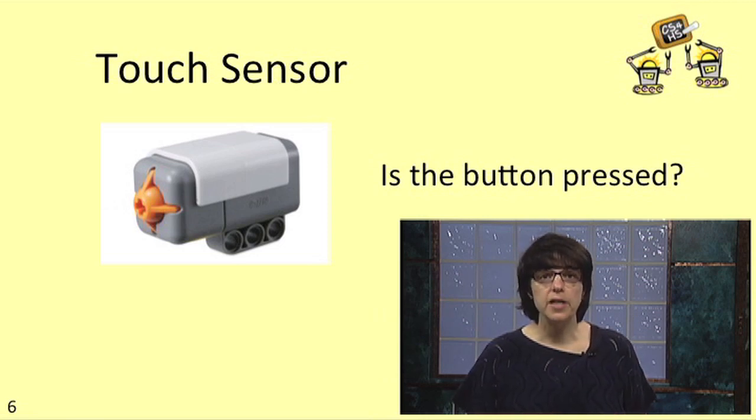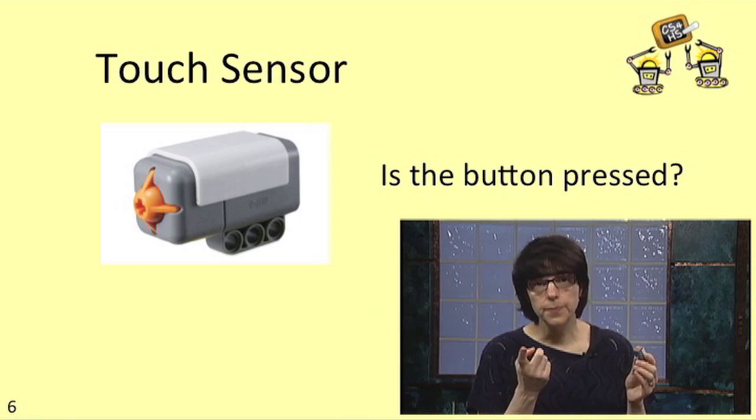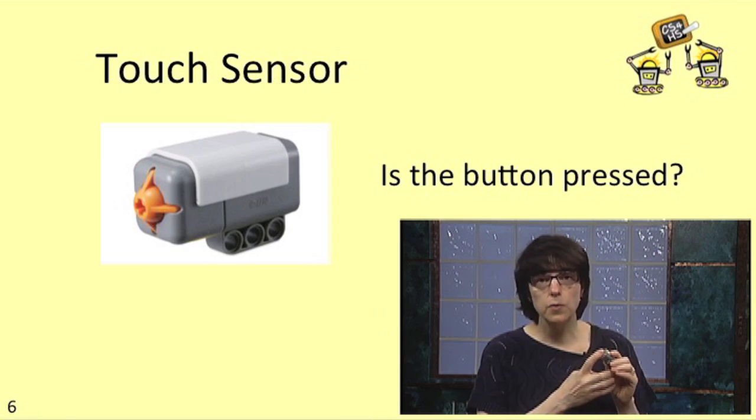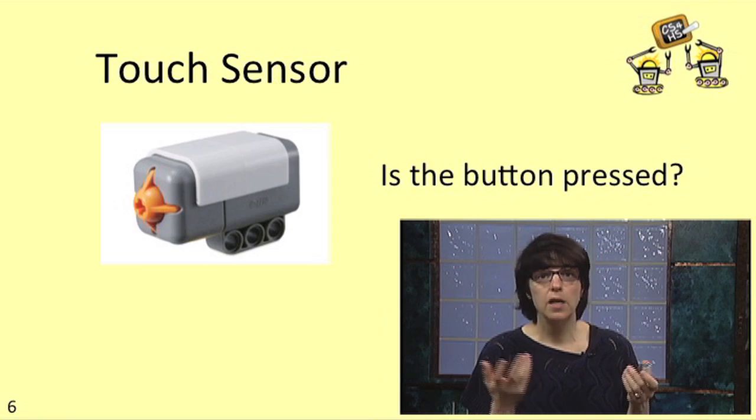The robot can check whether the orange button on the touch sensor is pressed or released. If the button's pressed, the robot figures that the sensor is touching something. If it's not pressed, well the robot knows the sensor isn't touching anything, though of course some other part of your robot might be.